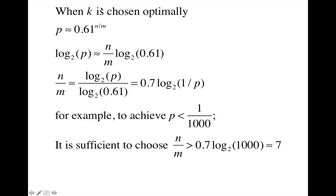So now if we choose k optimally, we get that the probability of failure is 0.61 raised to the n over m. So after some algebraic simplifications, we get that n over m, the size of the table over the number of elements has to be at least 0.7 times log base 2 of 1 over p.